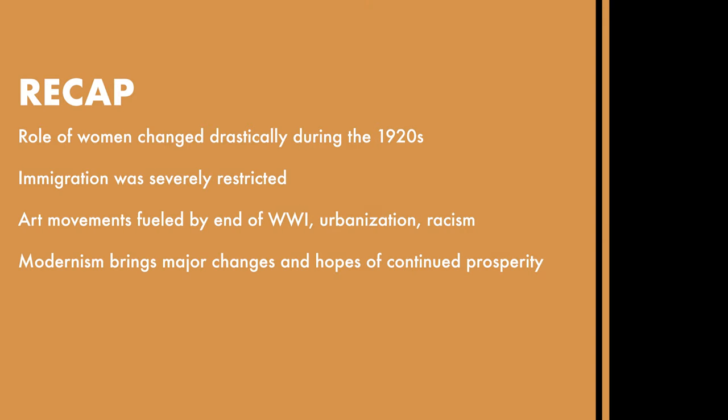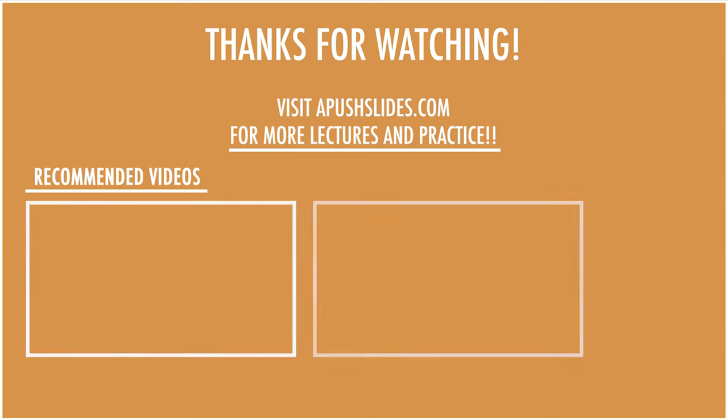Here's the recap: The role of women changed drastically during the 1920s. Immigration was severely restricted through the 1921 and 1924 Quota Acts. Art movements were fueled by the end of World War I, urbanization, and racism. Modernism brought major changes in hopes of continued prosperity. But as we'll talk about in the next lecture, that hope of prosperity is going to come crashing down with the Great Depression. Thank you for watching. For more practice for the AP exam, visit apushslides.com.